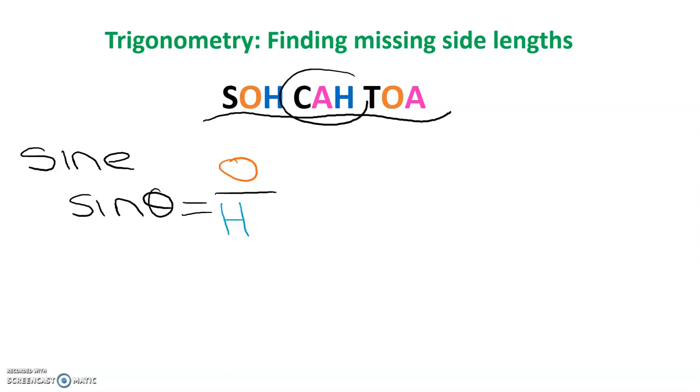Let's now look at the CAH. So the C stands for cosine and the abbreviation for this is cos. Again put the symbol in and that equals A over H which is the adjacent over the hypotenuse.